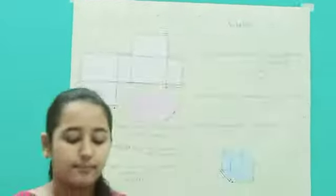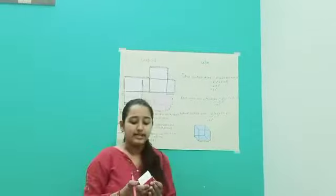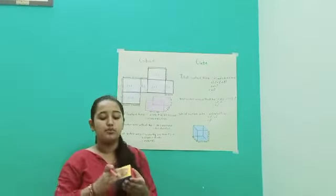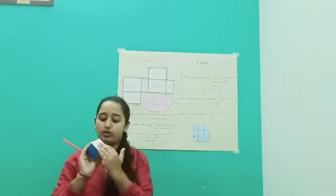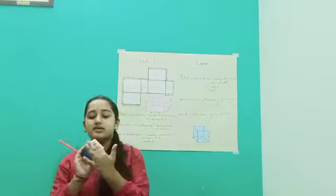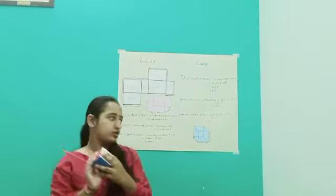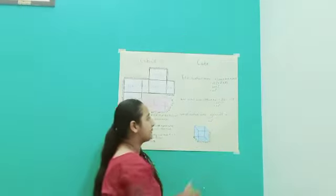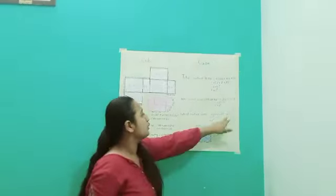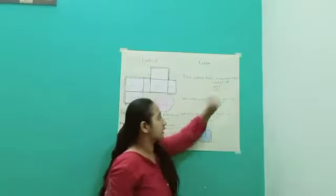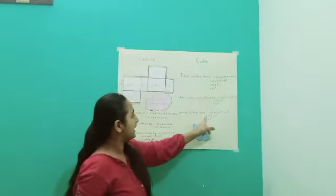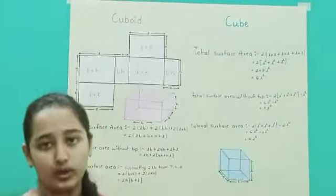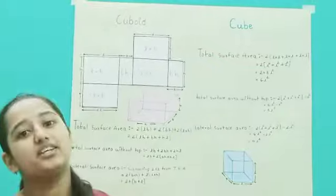Now, lateral surface area. As explained, lateral surface area means removing the top and the bottom also. So I remove this white portion as well, subtracting 2L squared from the total surface area: 6L squared minus 2L squared gives 4L squared. Thank you.